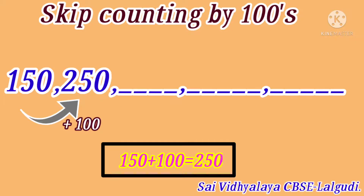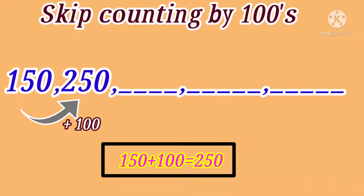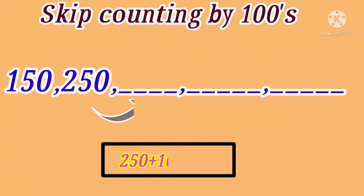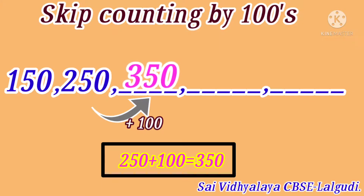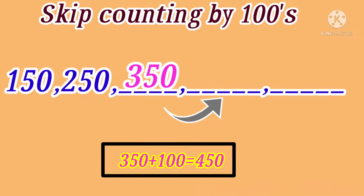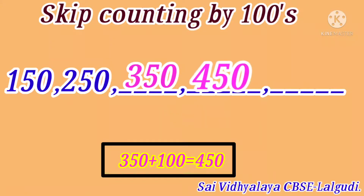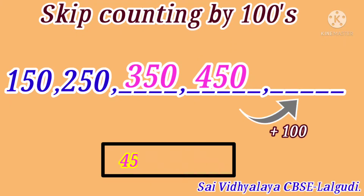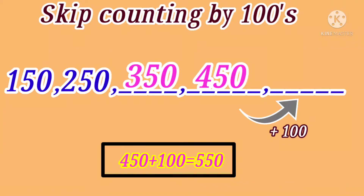350. 350 plus 100 is equal to 450. 450 plus 100 is equal to 550.